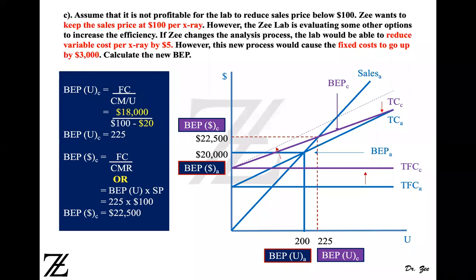In part C, Z wants to keep the sales price at $100, but the lab is evaluating options to increase efficiency. If they change the analysis process, it may reduce variable cost by $5. However, fixed costs will go up by $3,000. So the new fixed cost is $15,000 plus $3,000 equals $18,000. The original variable cost per unit was $25, but with the new process it becomes $25 minus $5 equals $20. So $18,000 over $80 gives a break-even point of 225 units.